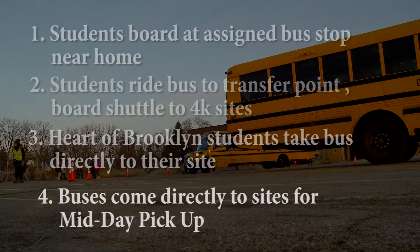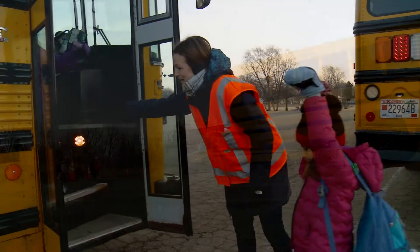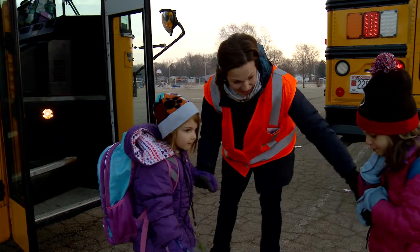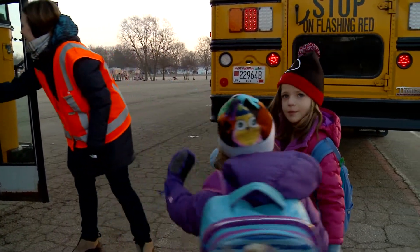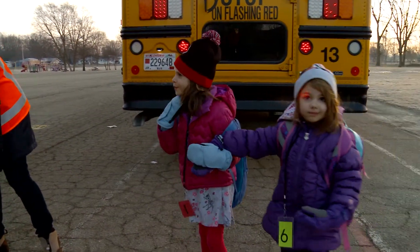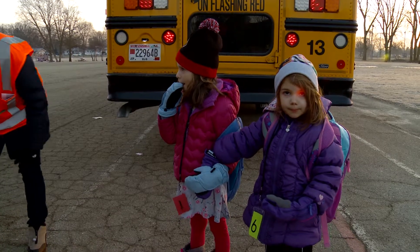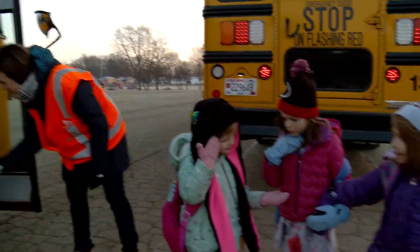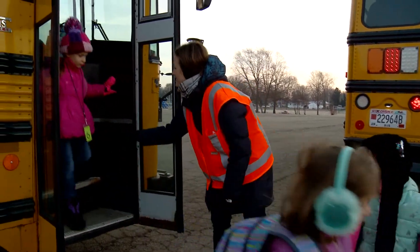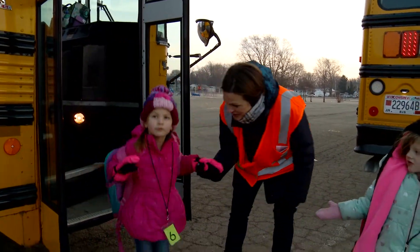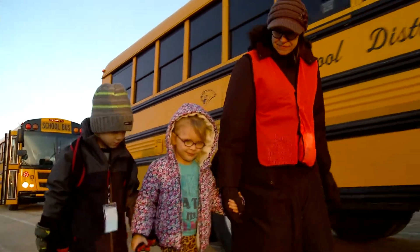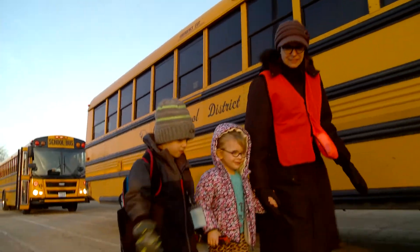Lastly, buses come directly to the sites for midday pickup. Another common question is how we know where each child needs to go. In addition to plans created and documented ahead of time, each child is given a bus tag that is worn when riding the bus to and from 4K. The number on the tag corresponds with their 4K site, and 4K bus supervisors use this tag to make sure your child gets on the correct shuttle.